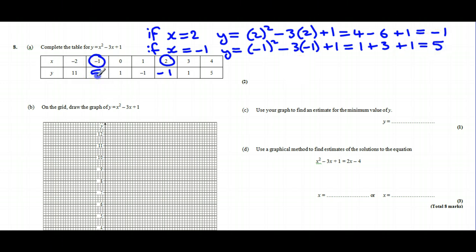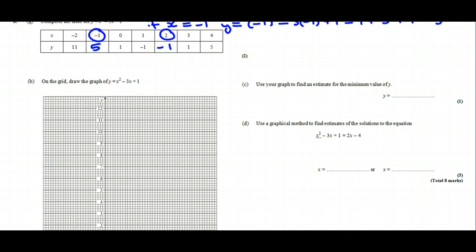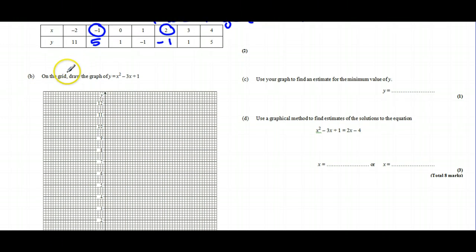So here we've got 5. If you have got these values wrong, it should become fairly obvious when you come to plot them on the graph, because you should find that your parabola shape is not quite right. So we now need to plot these points onto our graph.